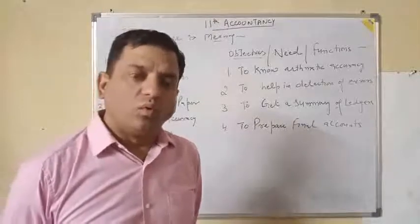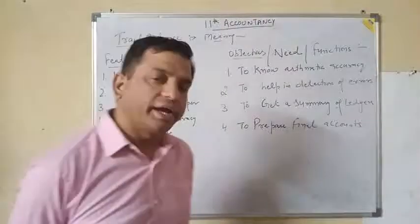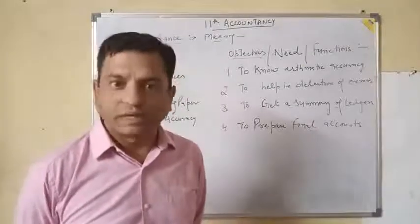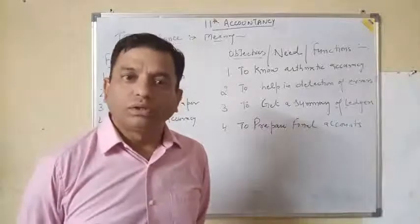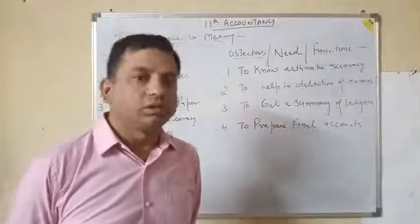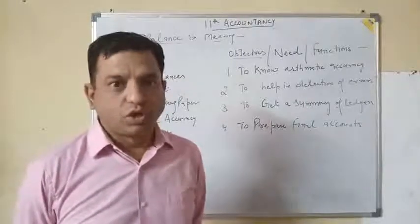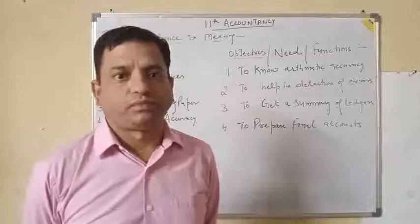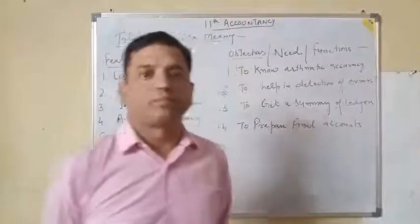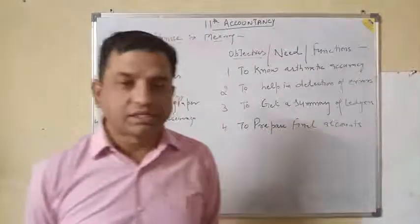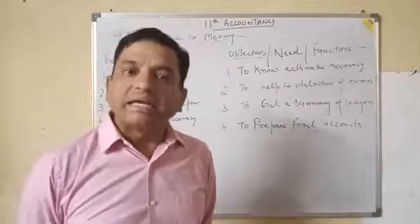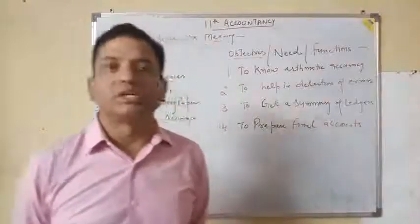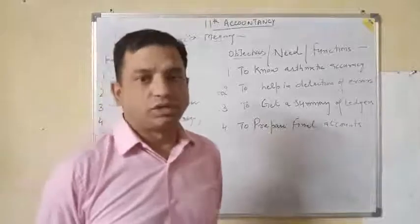When we covered the ledger and cash book, we also balanced up different types of ledgers and came to know the closing balances of all the ledgers as well as cash books. Now, after finding the closing balances of all the accounts, the next step in the accounting cycle is to make a summarization of the transactions — a summarization of the books of accounts.